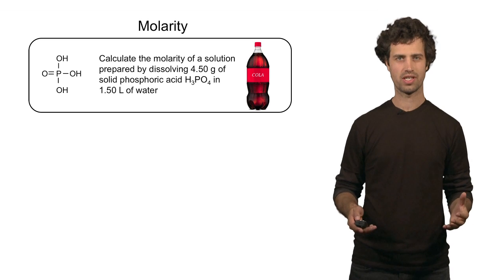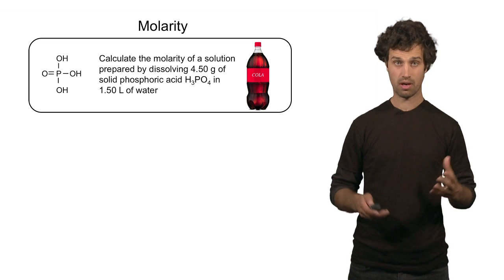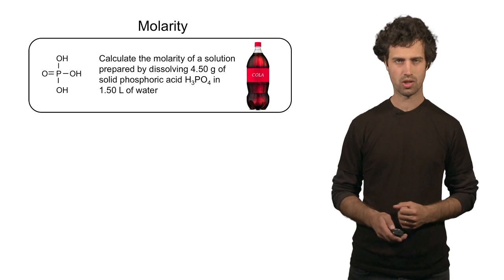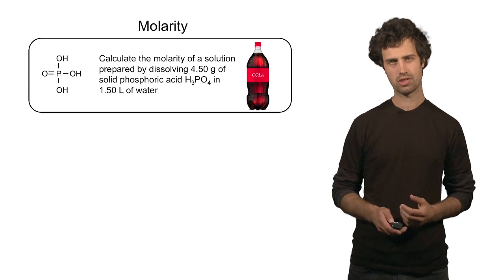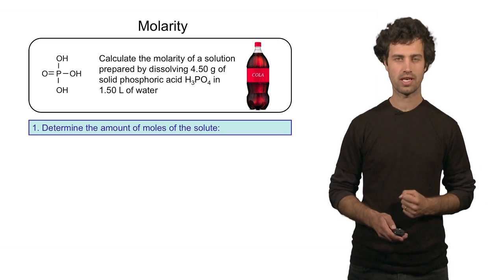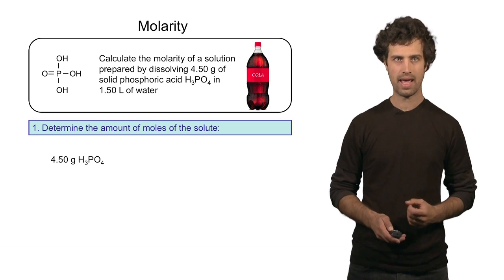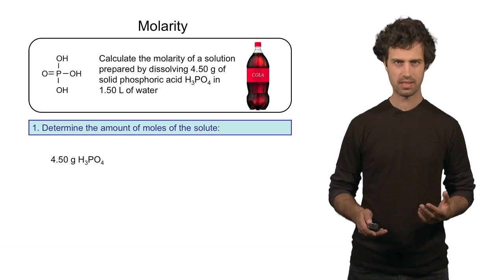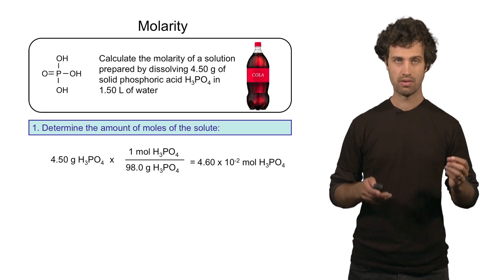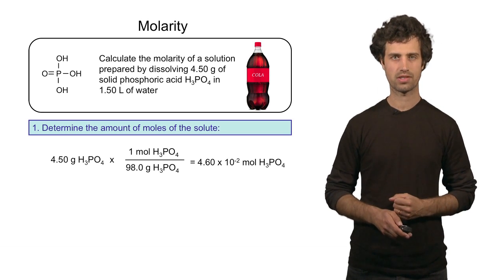Let's calculate the molarity of phosphoric acid. Let's say I have 4.5 grams of phosphoric acid, and I dissolve that in 1.5 liters of an aqueous solution. What is the concentration expressed in molarity? The first thing you have to calculate here is the number of moles of the solute, which is phosphoric acid. Dividing 4.5 grams by the molar mass of phosphoric acid, I find 4.6 times 10 to the minus 2 moles of phosphoric acid.